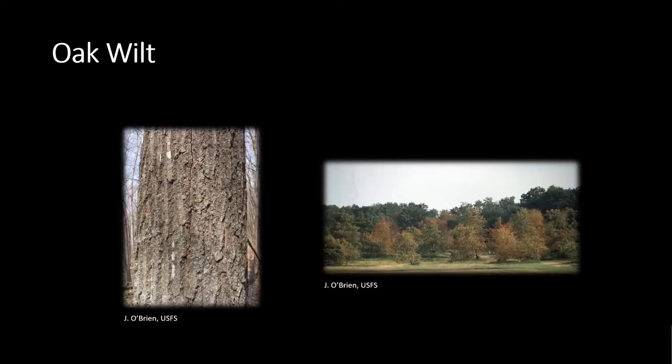Oak wilt is spread by insect vectors and underground root grafts. The left picture shows the bark split symptoms created from a pressure pad. The image to the right shows mortality by root grafts underground. We call these groupings infection centers.